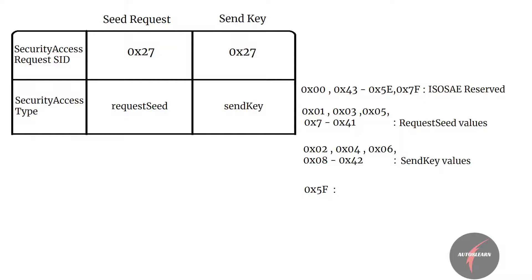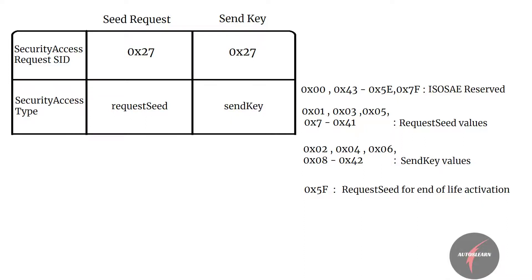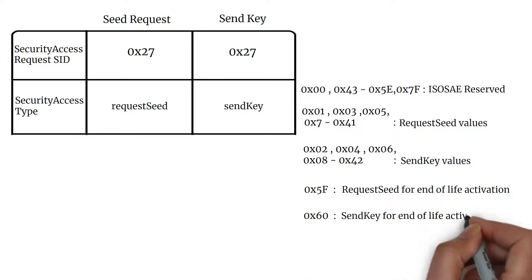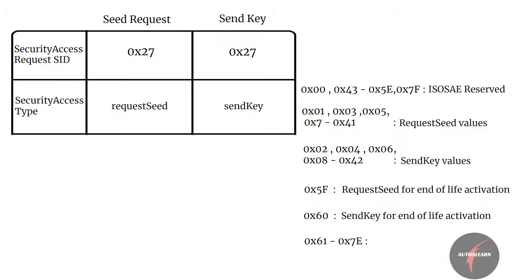Value 5F maps to request seed with different levels of security defined for end-of-line activation of onboard pyrotechnic device, as defined in ISO 26021-2. Value 60 maps to send key with different levels of security defined for end-of-line activation of onboard pyrotechnic device, as defined in ISO 26021-2. Value range from 61 to 7E is reserved for system supplier and other specific use cases.